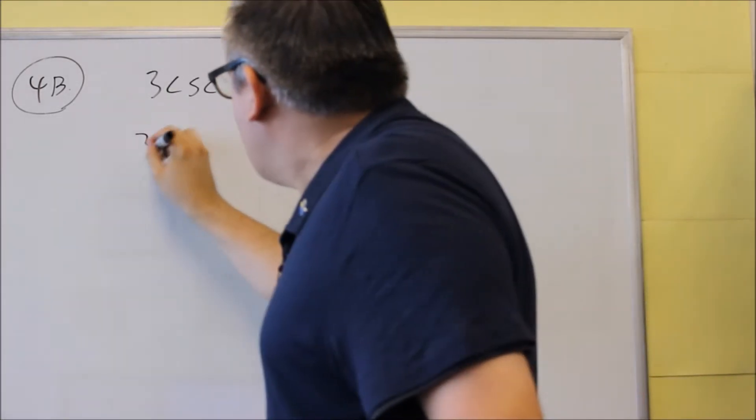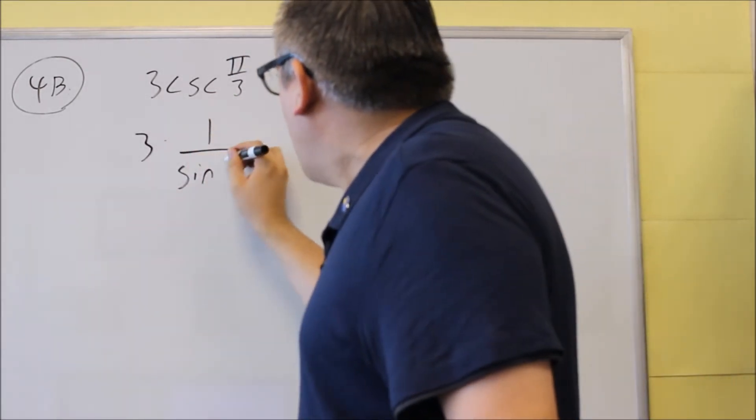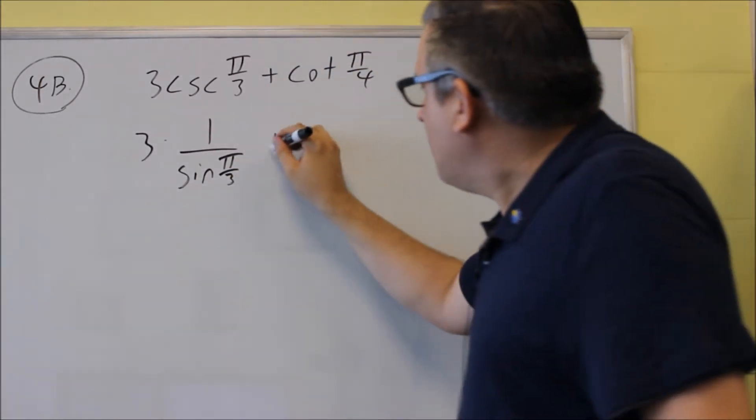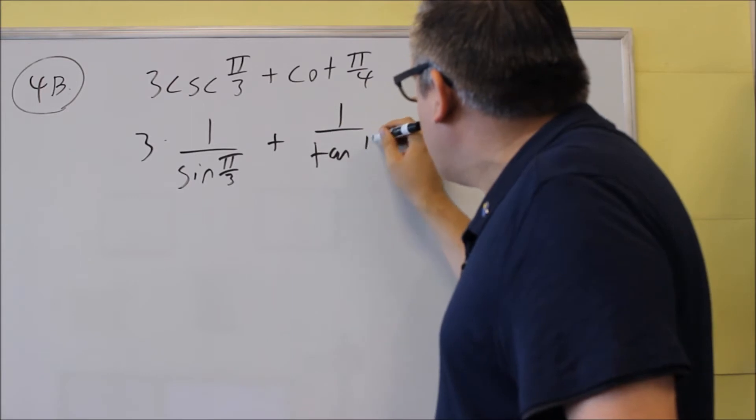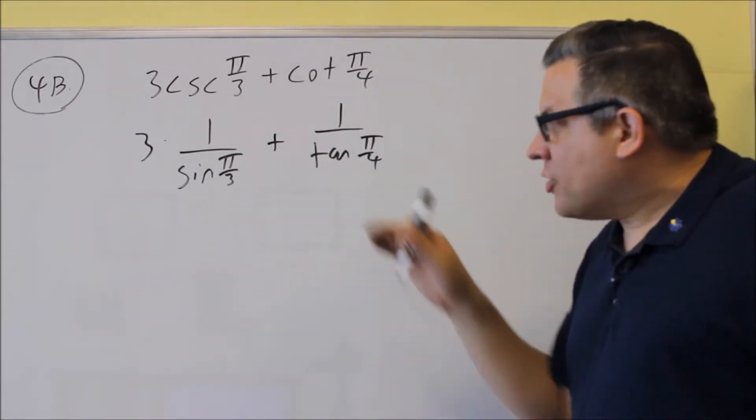This one is the same. So for this cosecant, cosecant is the same thing as 1 over sine, so we're going to do 1 over sine π over 3. Cotangent is the same thing as 1 over tangent. So we're going to do that first, to put them by using the identities.